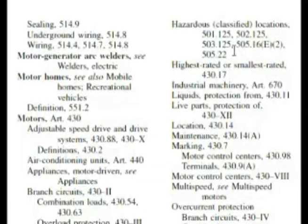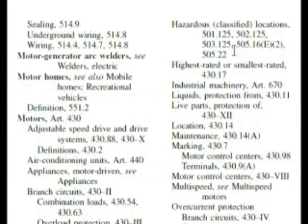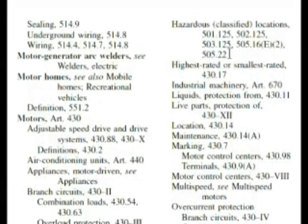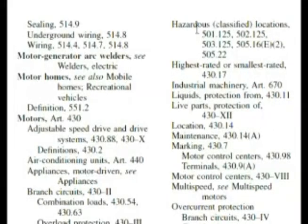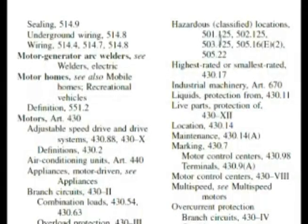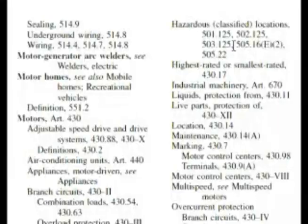I'm getting these screenshots from the electronic version of the code. When I prepare the lesson and make my notes, I use the code book itself. This actually says 503.126 in the printed book. I also went and looked under hazardous locations and motors, and you can find it that way. It cites 503.126 under hazardous locations and motors. But even if it says that, you're right on the page and you're going to look at 503.125, because the bold headline jumps out at you.